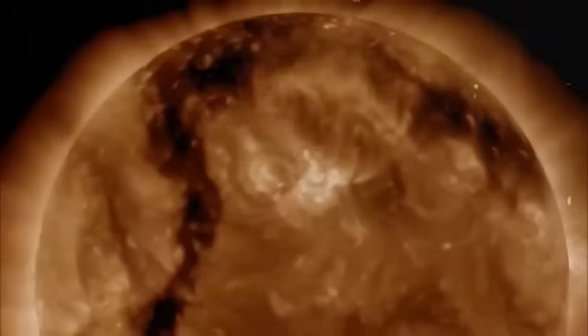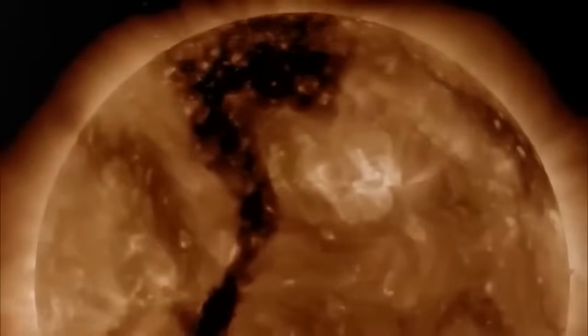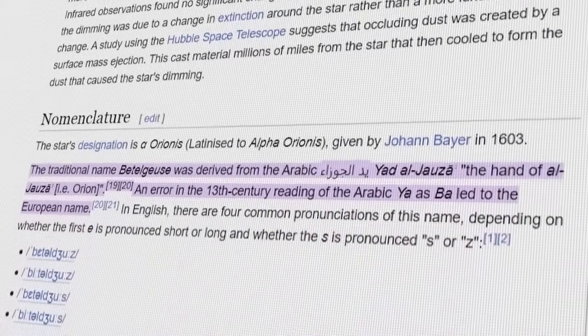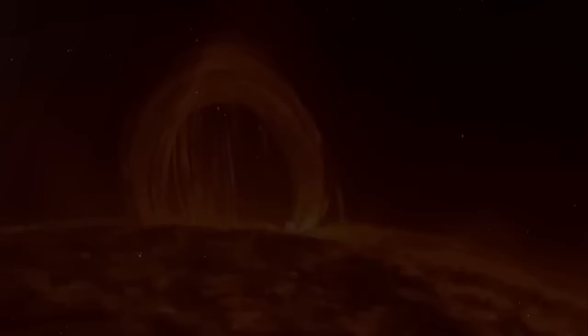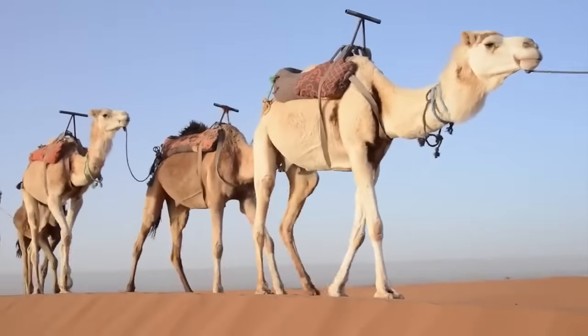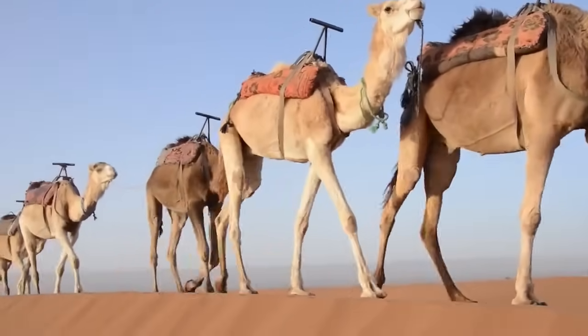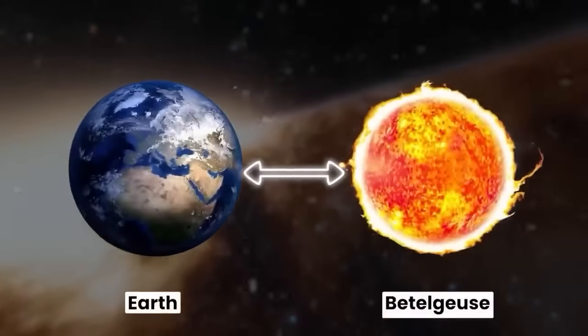Betelgeuse stands out not only for its brightness, but also for its history and significance in human culture. Named after the Arabic term Yad al-Jawza, which means the hand of Orion, Betelgeuse has been observed and documented by ancient civilizations. For centuries, it has been a guide for travelers and a point of wonder for stargazers, with its reddish hue distinguishing it from other stars in the Orion constellation.